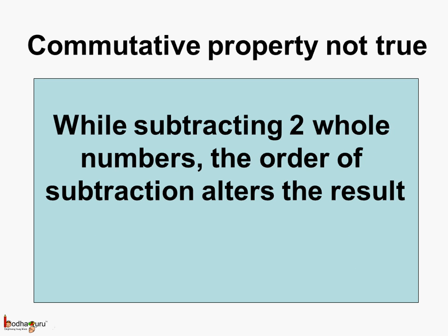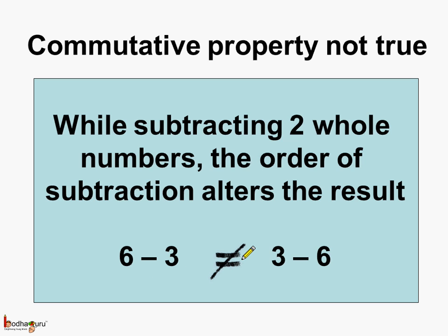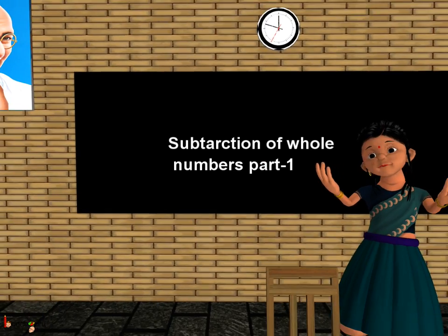Next, the commutative property is not true for the subtraction of two whole numbers. This means while subtracting two whole numbers, the order of subtraction alters the result. For example, 6 minus 3 is not equal to 3 minus 6, because 6 minus 3 is equal to 3, but 3 minus 6 is equal to minus 3. So now we know two properties related to subtraction of whole numbers; the other properties we will see in the next class.